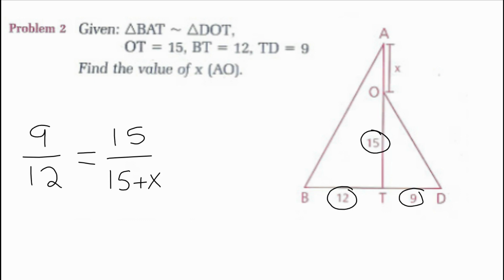Now I can use my means extremes product theorem to multiply this out. Instead of doing 9 and 12, I'm going to simplify this by taking out a 3 and making this 3 over 4, just to make my multiplication a little bit easier. Multiplying this out, I would get 60 is equal to 3 times 15 plus X, which would simplify to 45 plus 3X. I'll subtract 45 from both sides to get 15 is equal to 3X, and then X would be equal to 5.